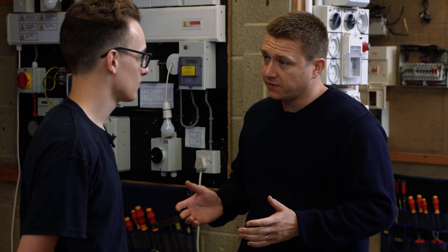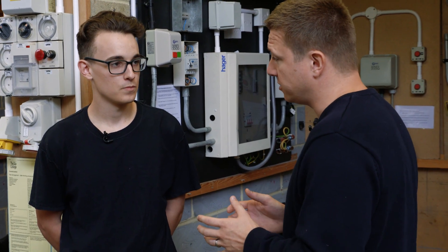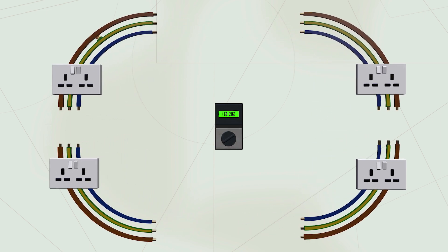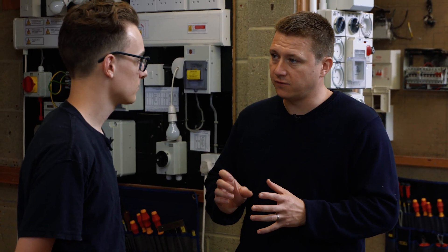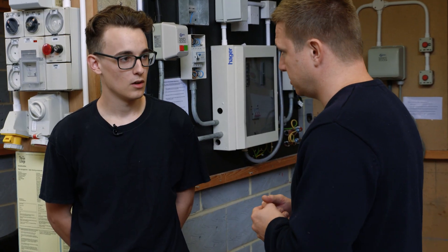So Ryan, you carried out the fault finding procedure. You identified that there was a short in the circuit or an earth fault between line and CPC. You sectionalised the circuit, which means you broke it down into individual parts and you managed to locate exactly where that fault was. Now you had to rectify the fault. Can you explain to me what you did to rectify the fault?